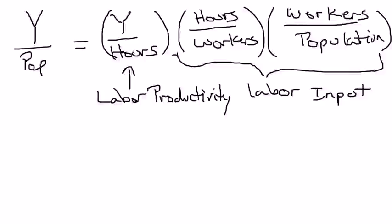Hi everyone. This short video is supposed to explain why economists believe that increases in labor productivity are the factor that ultimately drive the increase in the standard of living over time. Economists measure the standard of living using real GDP per capita, shown on the left-hand side. We call it the standard of living because it tells you how much stuff the average person can buy — food if they're hungry, clothing if they're cold, shelter, health care, etc.